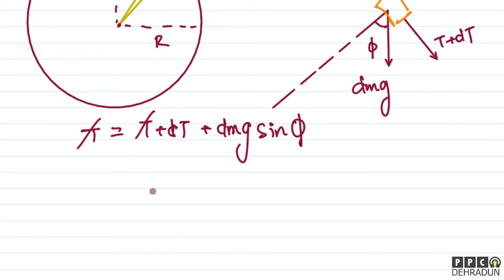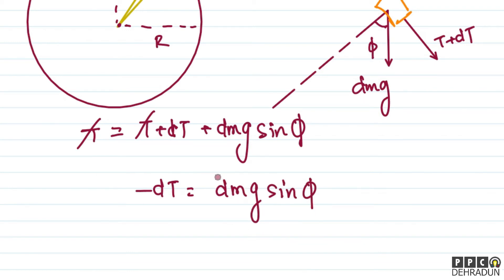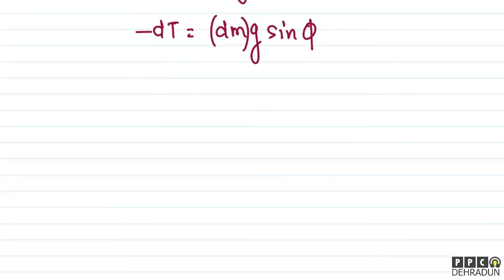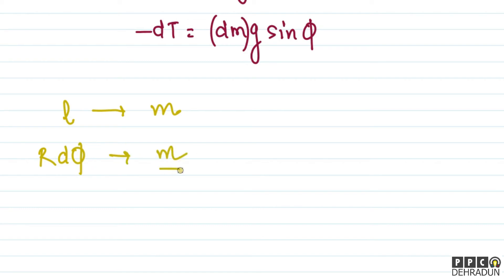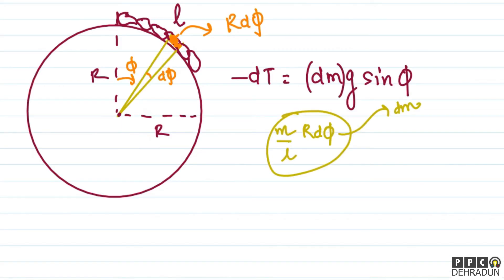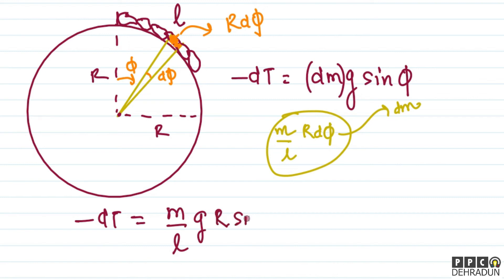Now I need dm, the mass of this element. Using the unitary method: the full chain of length L has mass m, so element of length R·dφ has mass dm = (m/L)·R·dφ. Substituting: −dT = (m/L)·g·R·sin φ·dφ.